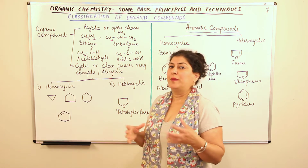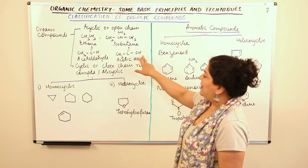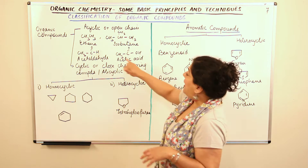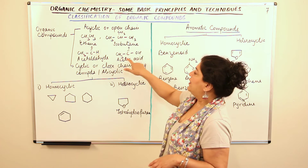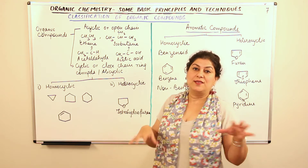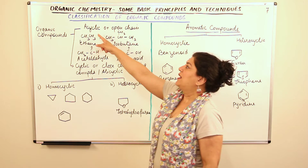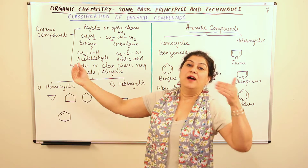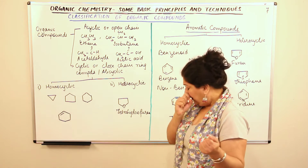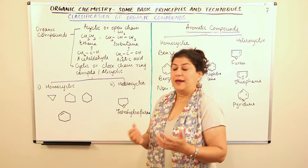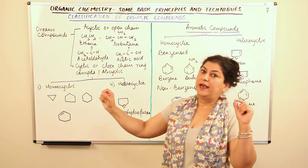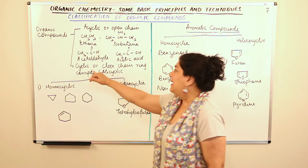Then you have acetic acid — CH3COOH — where the COOH group forms the carboxylic acid group. Again you see open ends: the CH3 is an open end. Whenever you have open ends to any molecule, that forms an acyclic or open chain compound. It may be a simple hydrocarbon — alkane, alkene, or alkyne — consisting of only carbon and hydrogen, or it may have other functional groups, but you can see the ends of the chain.